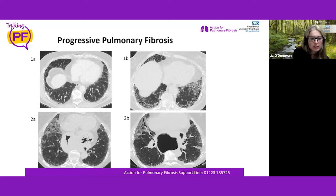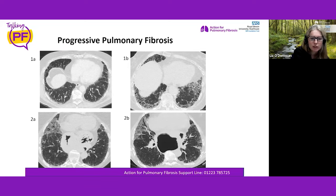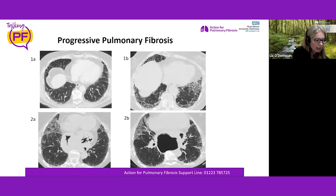The bottom scan shows milky change towards the front with some lines and airways, and a little reticulation at the back, progressing to much more dragged-out airways and increased reticulation — a progressive fibrotic NSIP.